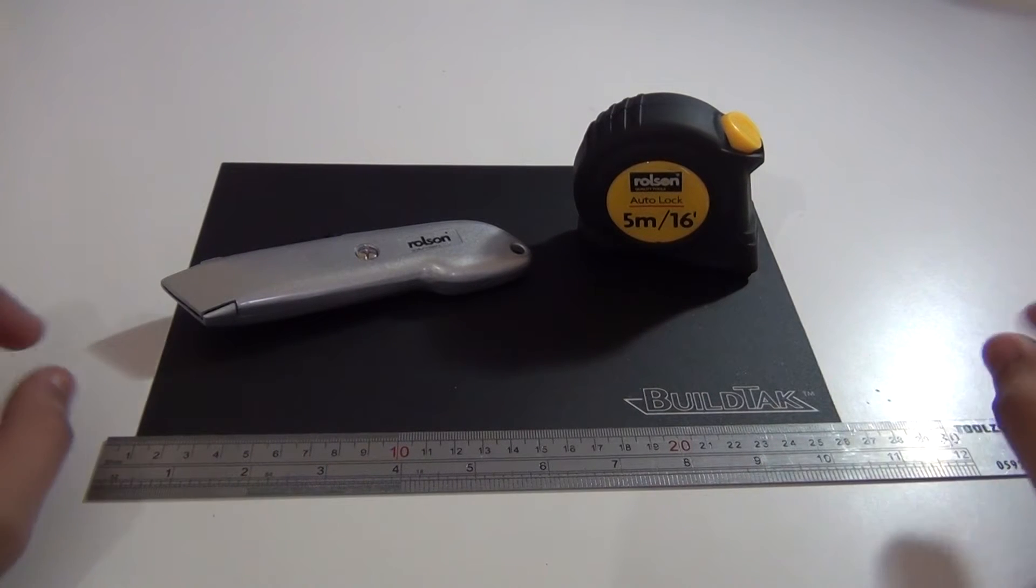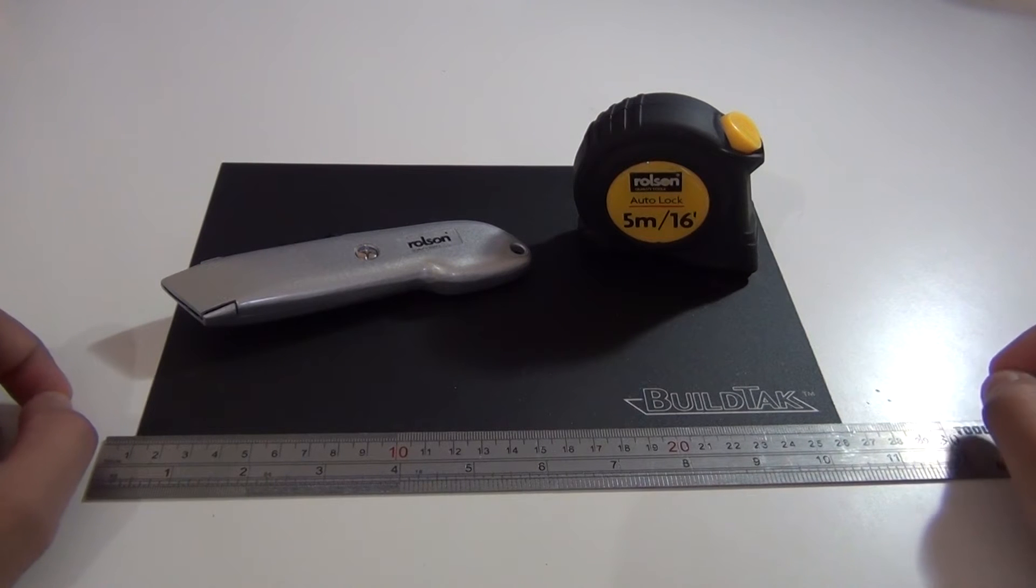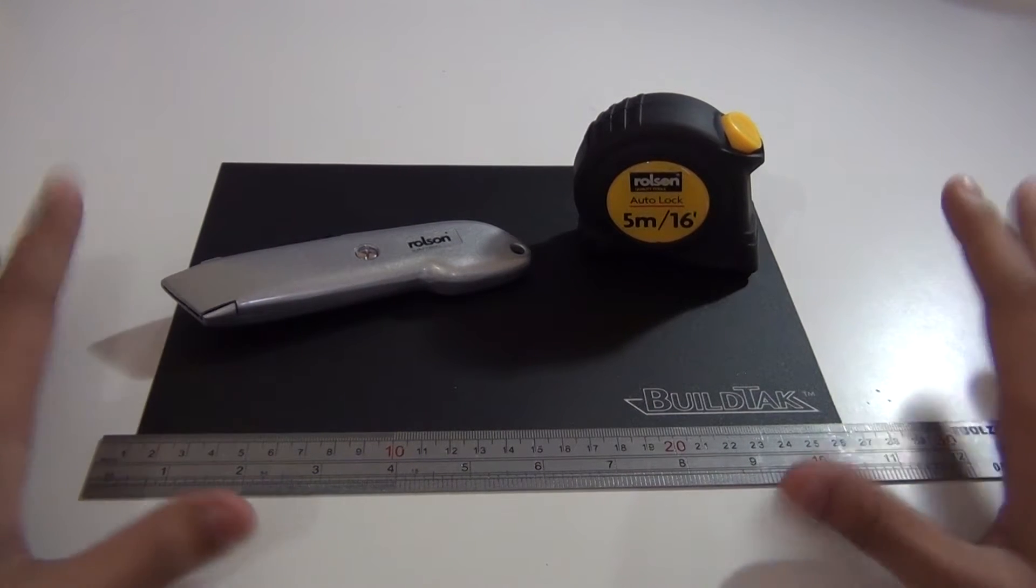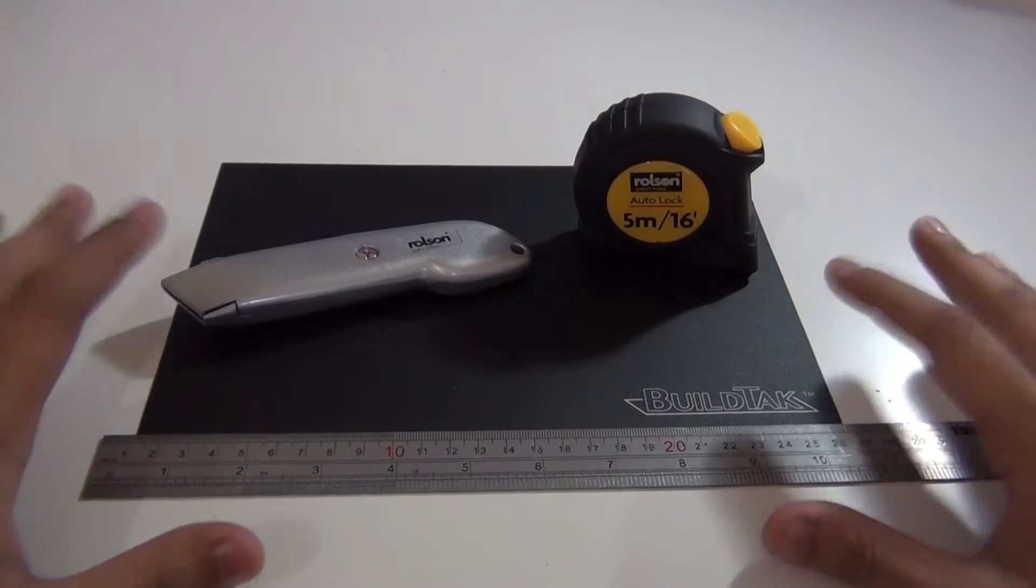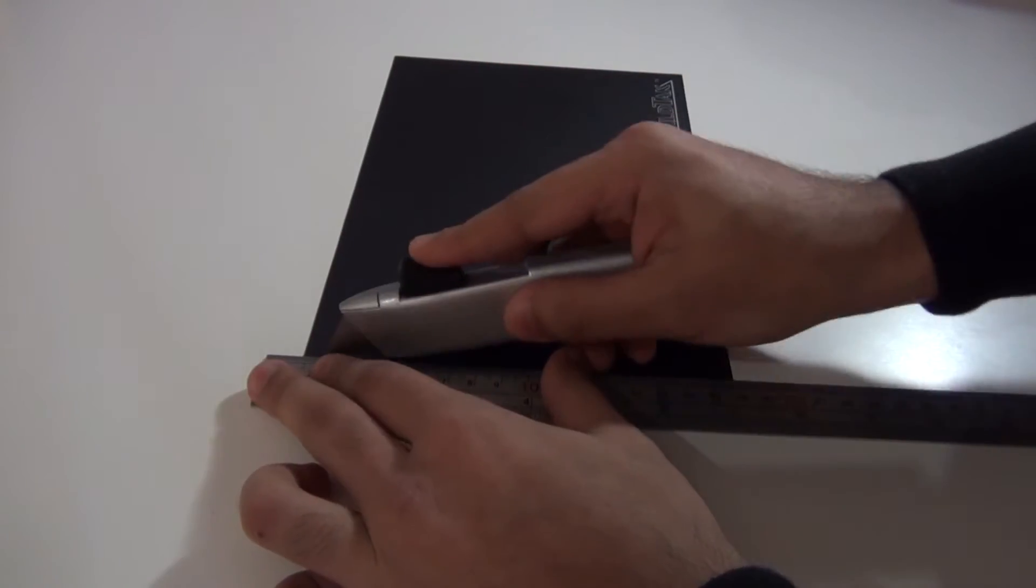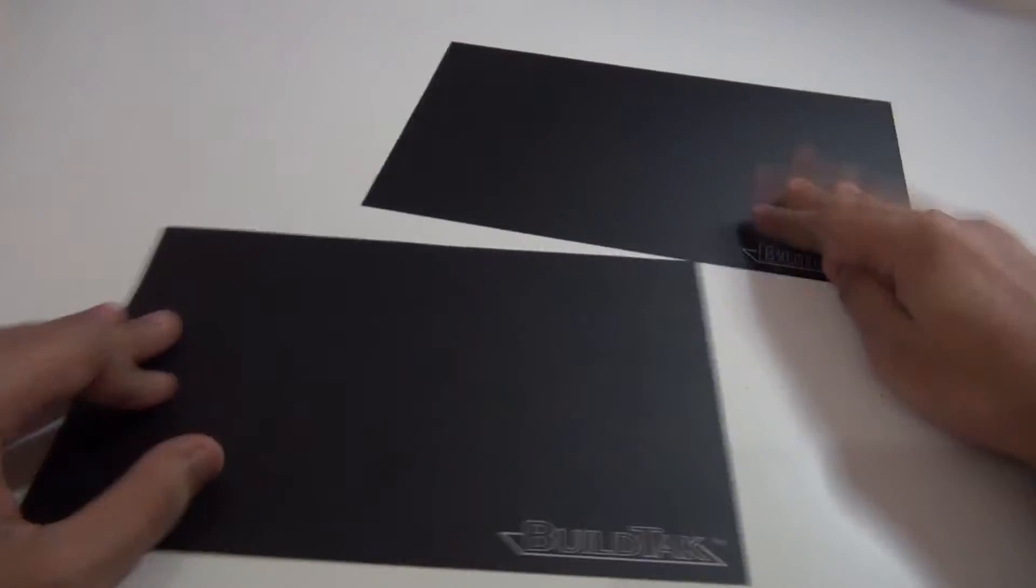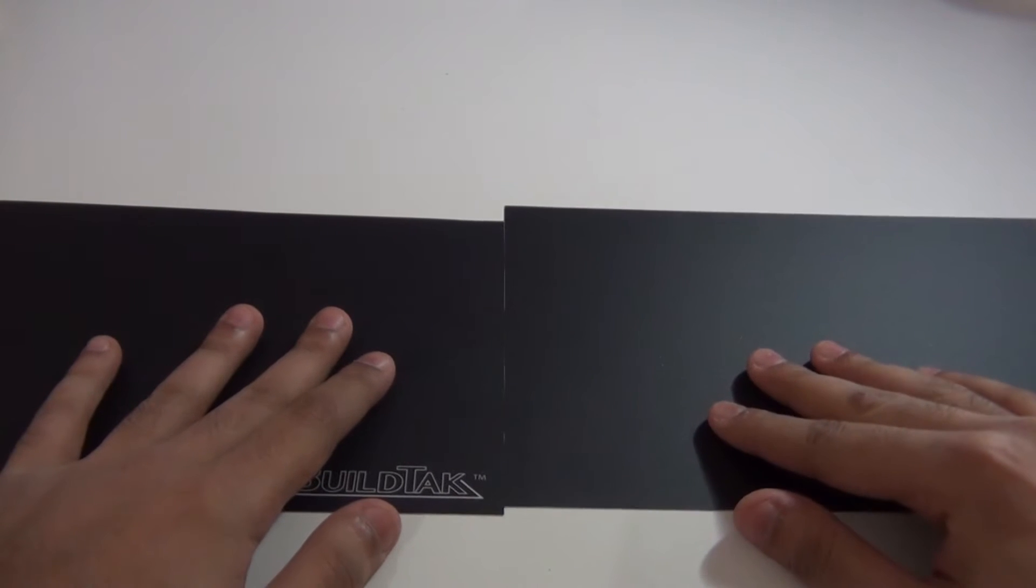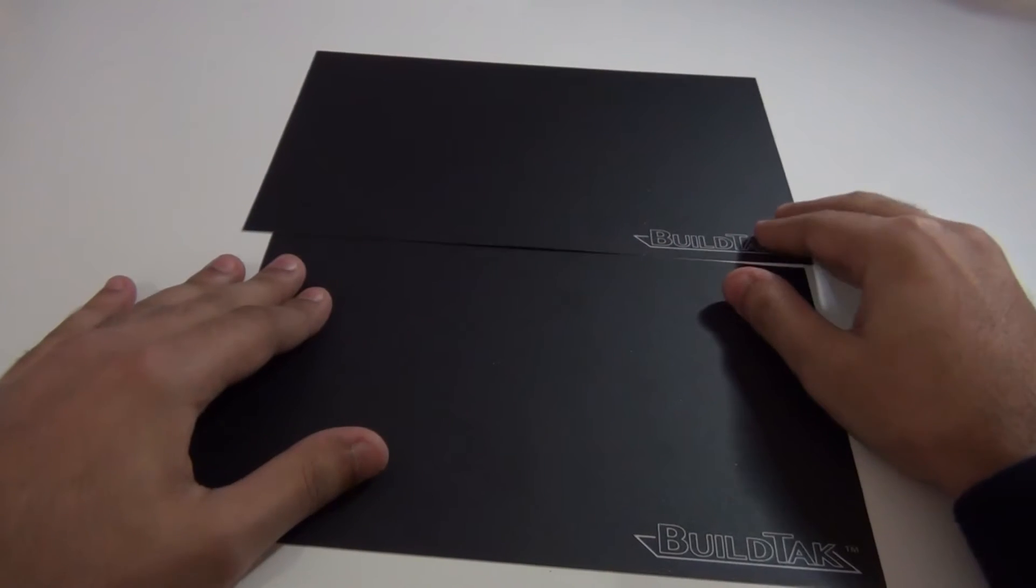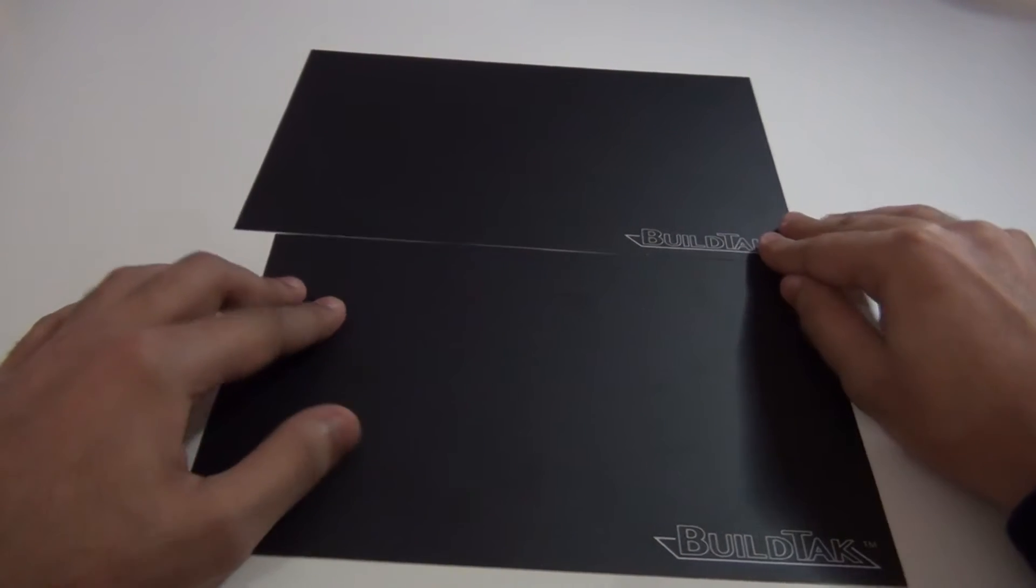That's to ensure that you've got about a millimeter or two on either side of the build plate just so that nothing goes wrong. So let's get cutting and I'll show you the difference between the two. So as you can see it's just a tad bit shorter on the top and it's just a little bit shorter along that way. Let's get this fitted onto our Flashforge Dreamer.